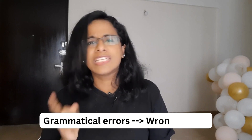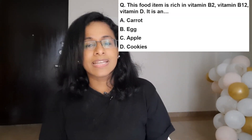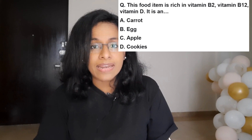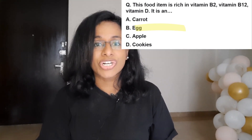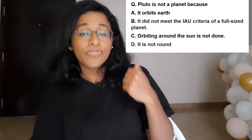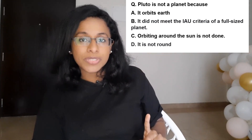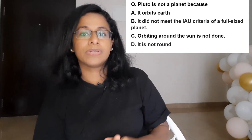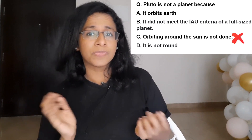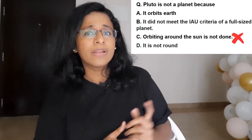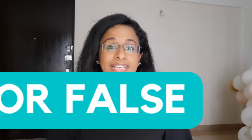Next is grammatical errors. The person who sets your exam is more focused on the correct answer than on correcting grammar for the incorrect answers. So if there's a grammatical error in one of the options, it's probably the wrong answer. For example, if the question ends with 'an,' the answer will probably start with a vowel. Looking at this example question, option C is clearly wrong because it is the only one that grammatically does not sound right.